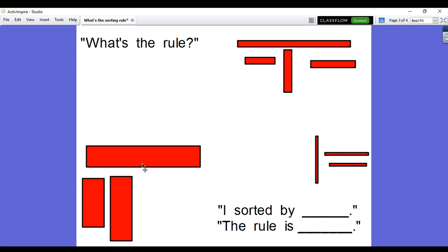Yesterday we learned about thickness. These rectangles are all thick. These rectangles are all thin. And these rectangles are kind of in the middle. So what's the rule? I sorted by thickness. The rule is thickness.